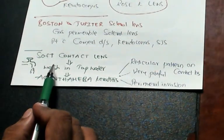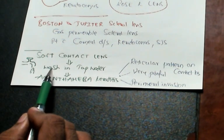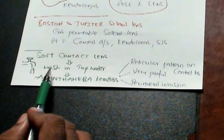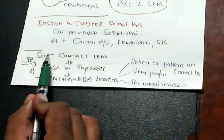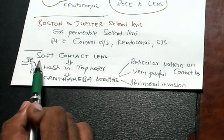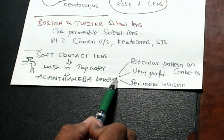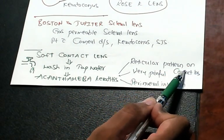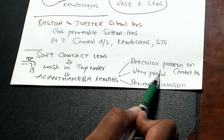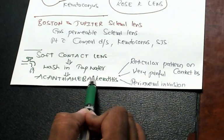Finally doctor, if you don't get a seat in NEET PG, you can open a spectacle shop with all this knowledge. That is more profitable business than becoming an ophthalmologist actually. So soft contact lens, if you wash in the tap water, you get Acanthamoeba keratitis. Acanthamoeba keratitis, there will be a reticular pattern on the contact lens. It will be very painful because there is a perineural invasion by the Acanthamoeba.